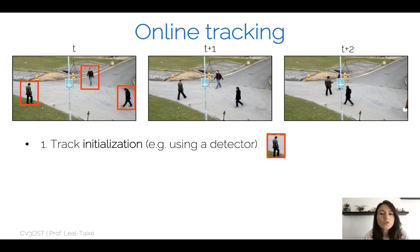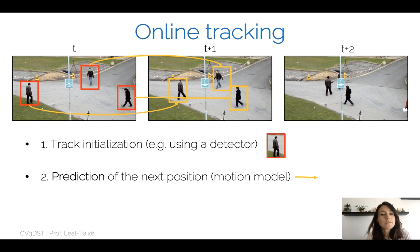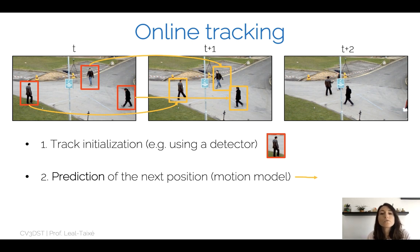Let's see how to perform online tracking with a tracking-by-detection paradigm. We start at frame T — since this is online tracking, we cannot look into the future. In the first frame, we run our detector to initialize our trajectories. For example, if we're tracking pedestrians, we train a detector to give us those objects from an image. Once the next frame T plus one comes in, we can predict the next position for each object. If we have been tracking for a while, we use a motion model; if we just started at frame T, we can assume the bounding box has not moved.